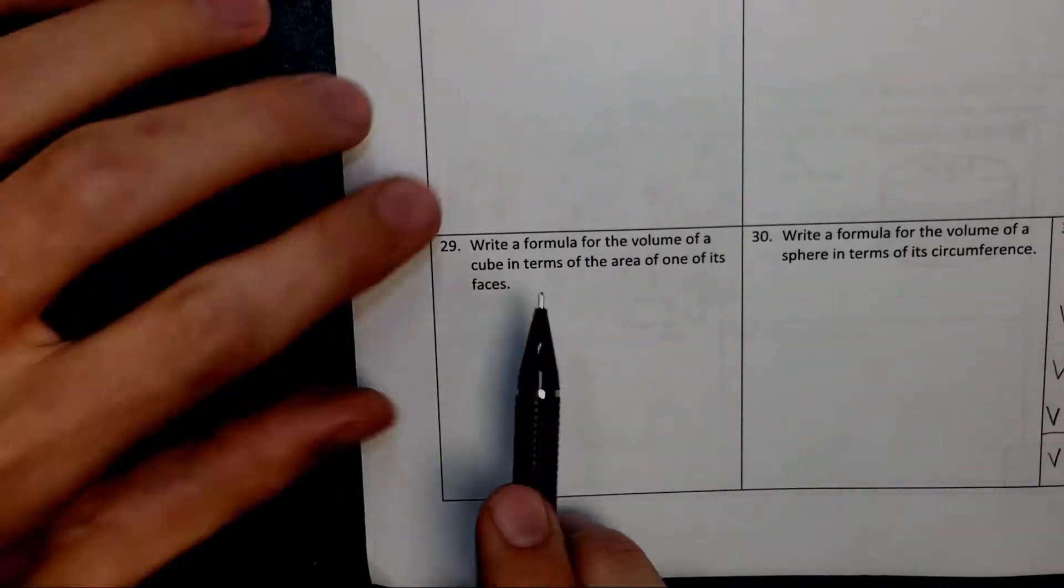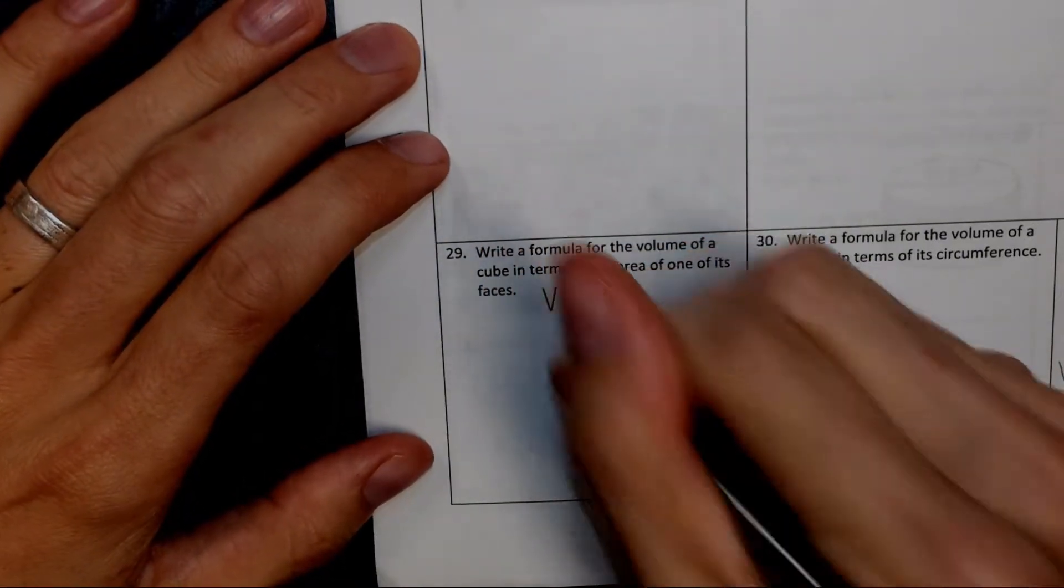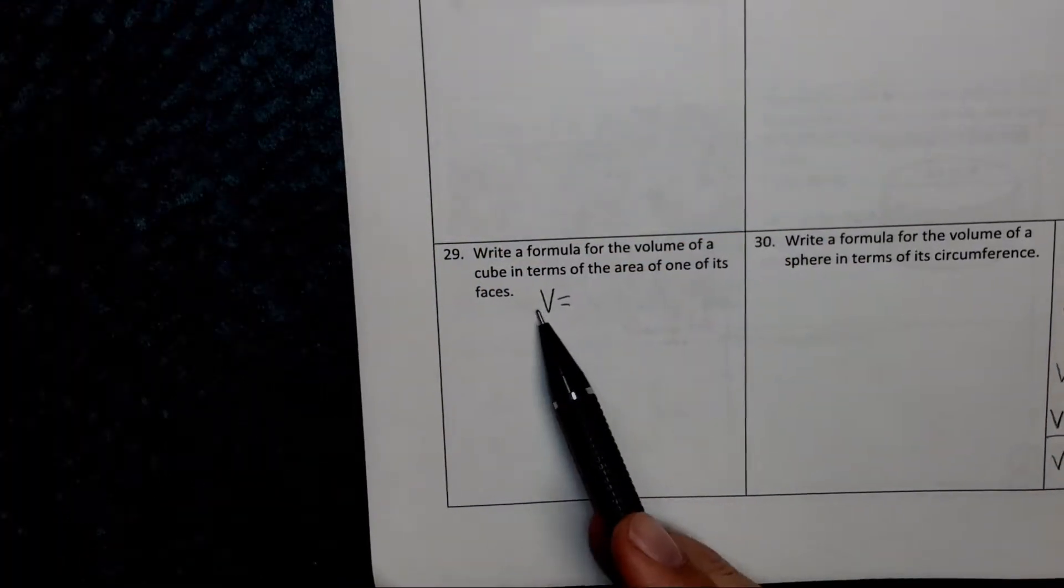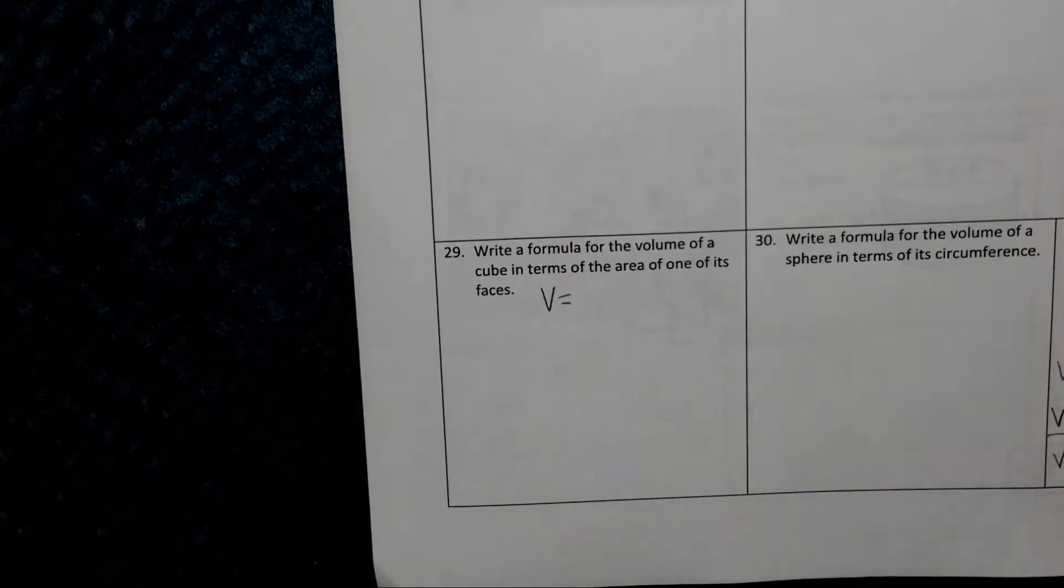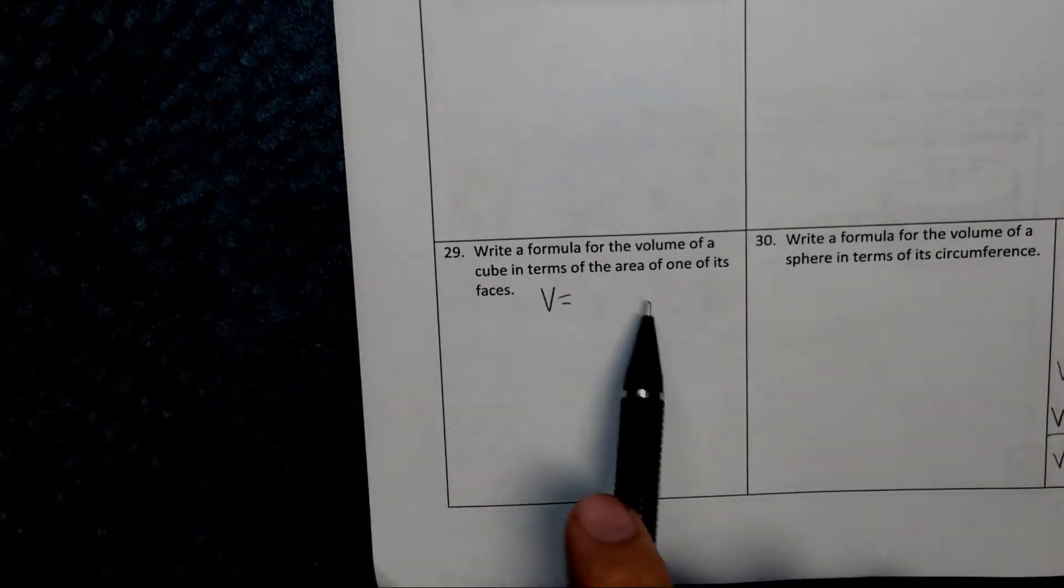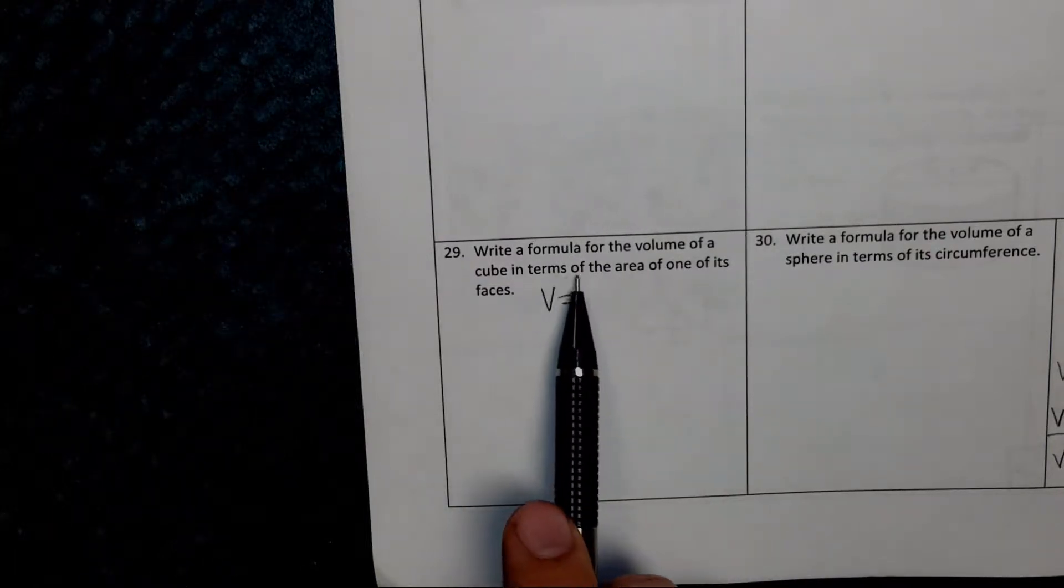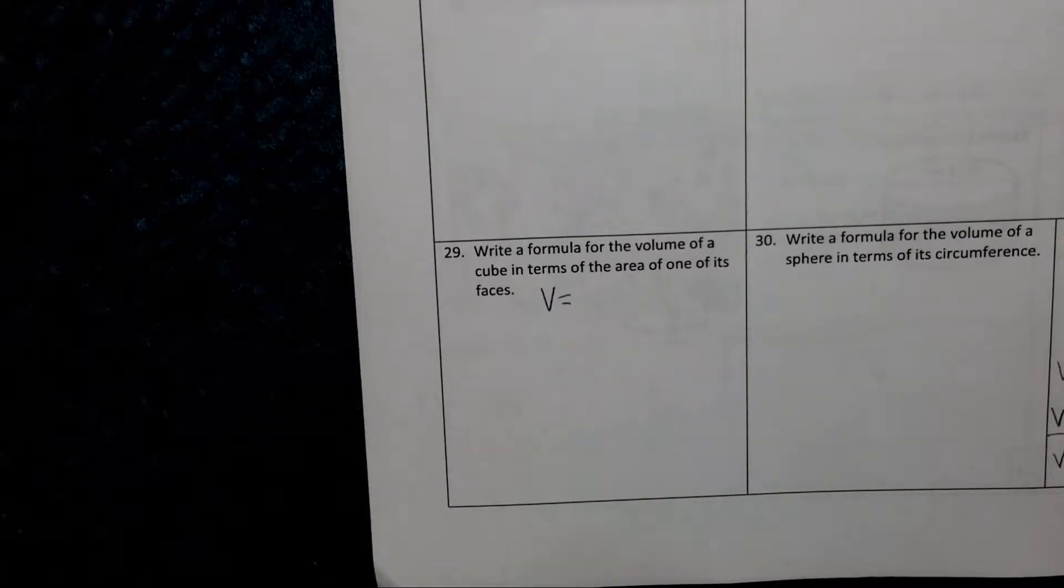In other words, when it says write a formula for the volume of a cube, that means we want some formula that calculates the volume. Volume equals something. And what should show up on the other side of this equation? What variable should be there? Well, we want this written in terms of the area of one of its faces.